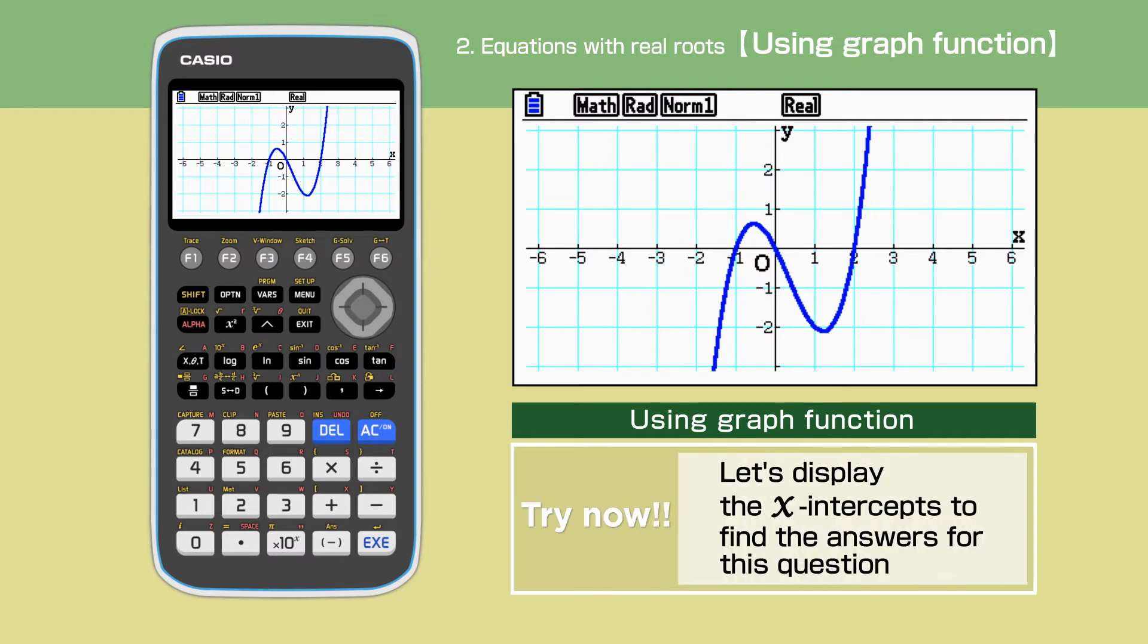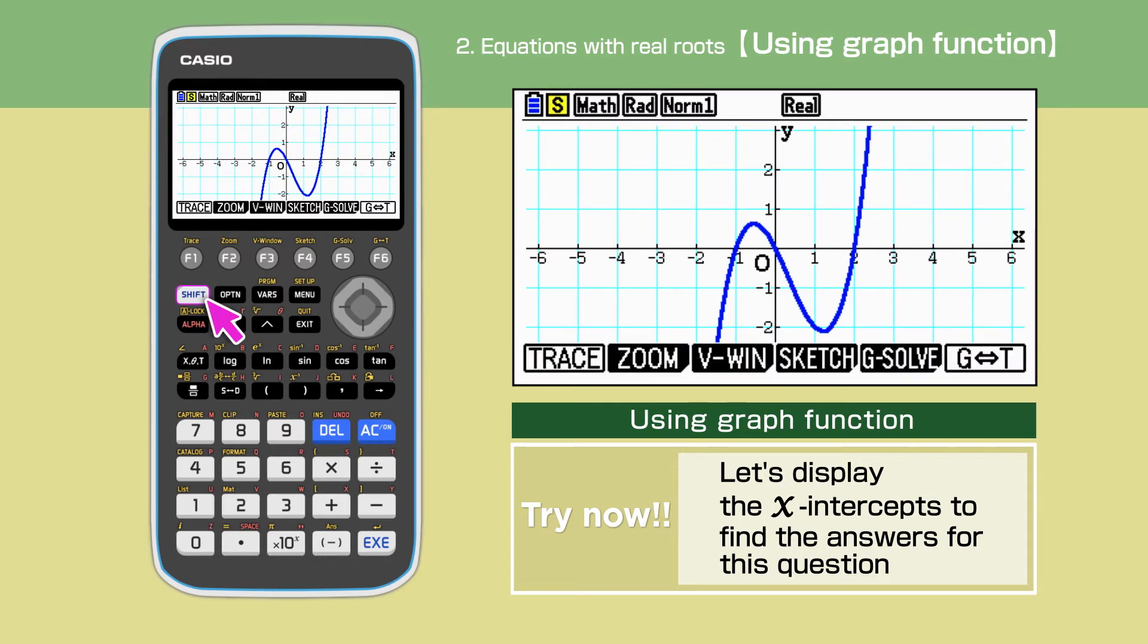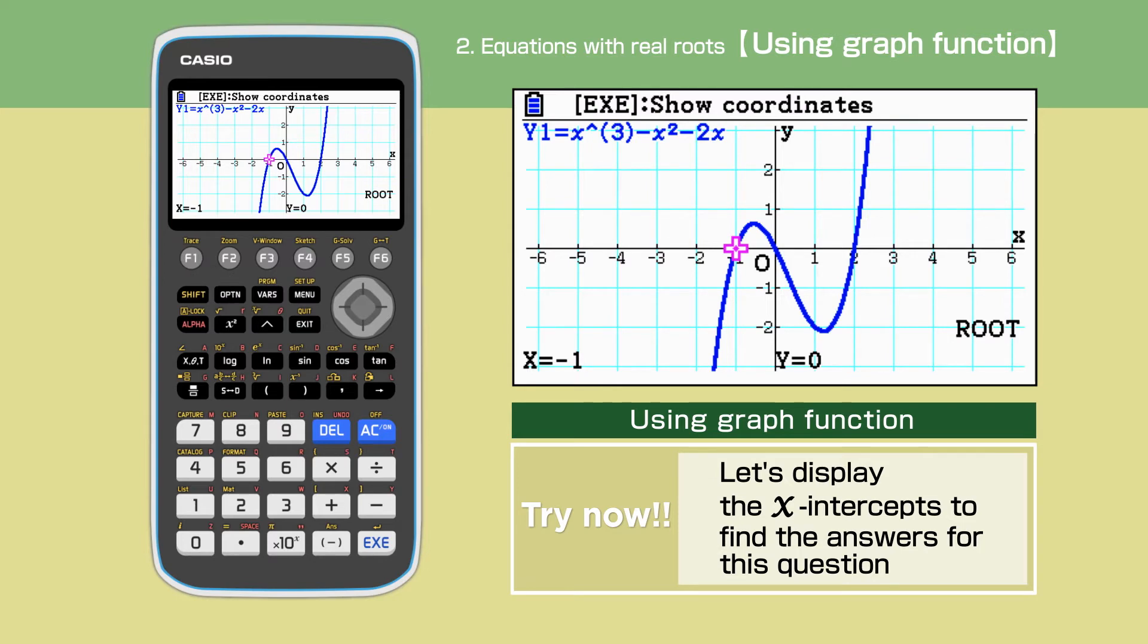To find where the function value is 0, we need to find the x-intercept, also known as the root. Press Shift to access the command menu. Press F5 to display g solve. Then press F1, root. The first interception of the x-coordinate is minus 1.